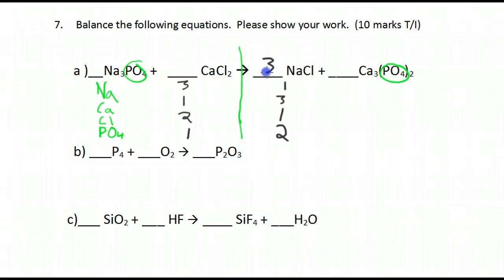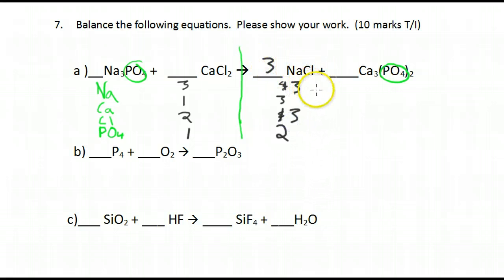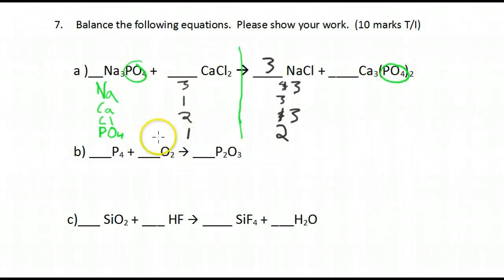Now we have three sodiums and three chlorines — we can't forget that this coefficient affects both elements. Now let's look at the phosphate: we have two phosphates on this side so let's put two here to even it out, but remember that also affects the sodium, so now the sodium is at six.